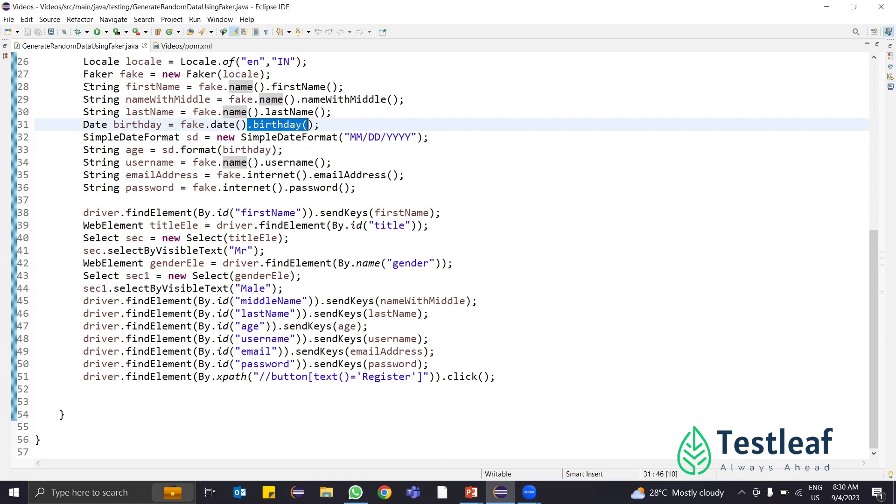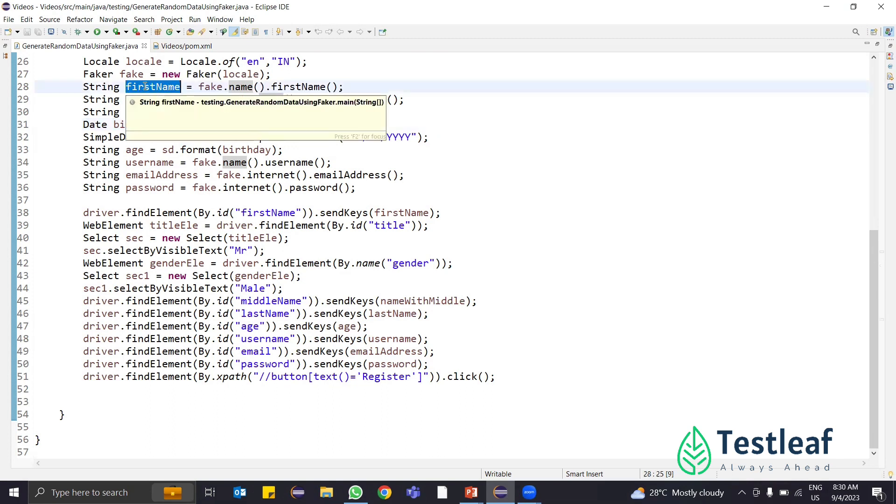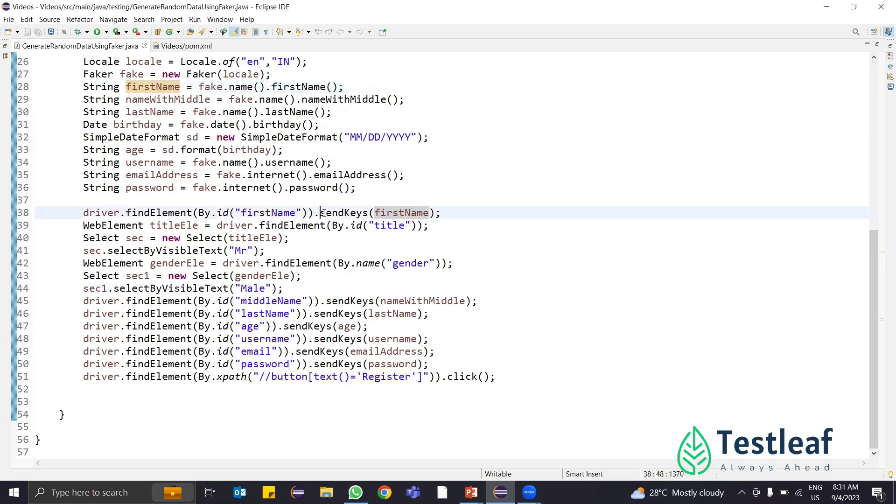After generating all these, I'll store it in a variable like firstName, middleName, lastName and everything. Finally, in my code, wherever I have to pass the data, if I want to enter first name, I find the element first by using the locator. Then in the sendKeys, I'll pass the randomly generated first name.